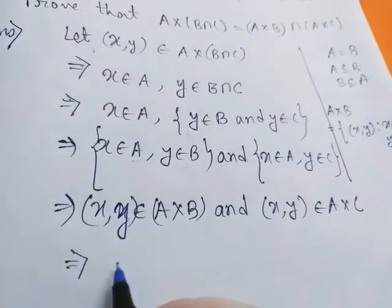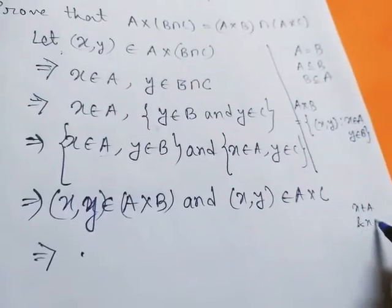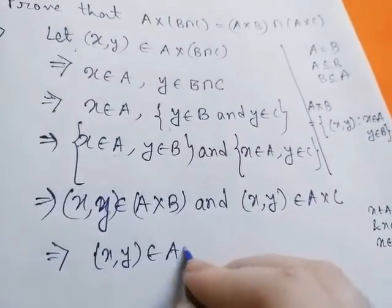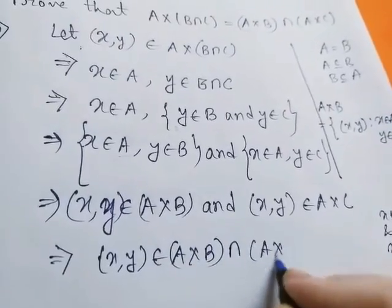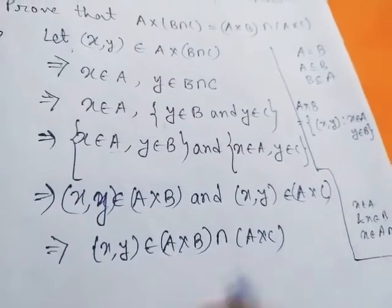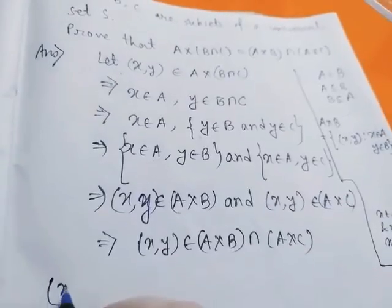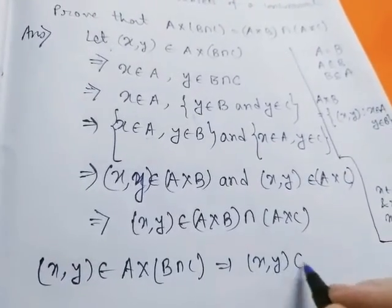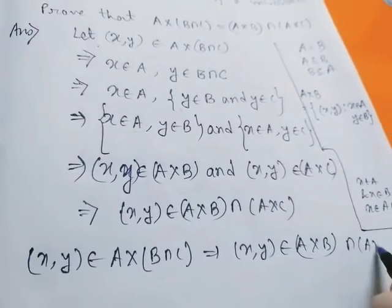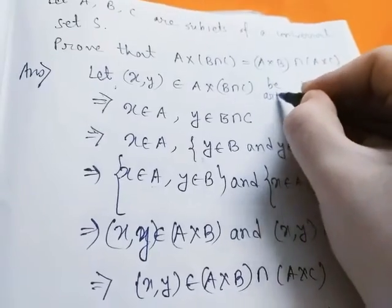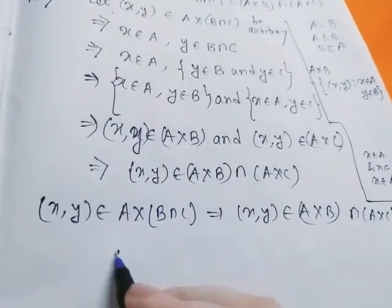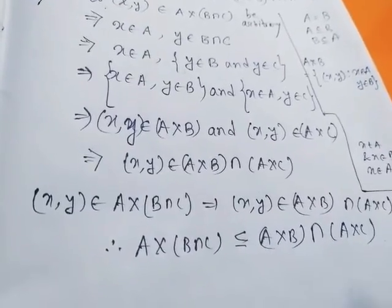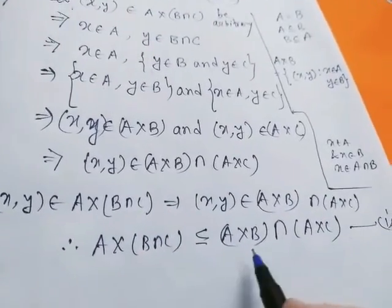This implies x belongs to A and y belongs to B, therefore (x, y) belongs to A cross B; and similarly (x, y) belongs to A cross C. So ordered pair (x, y) belongs to (A cross B) intersection (A cross C). We have proved that (x, y) ∈ A cross (B intersection C) implies (x, y) ∈ (A cross B) intersection (A cross C). Since (x, y) is arbitrary, A cross (B intersection C) is a subset of (A cross B) intersection (A cross C). We name this result (1).